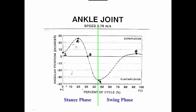From 0 to 40% is the stance phase, and from 40 to 60% is the swing phase. Positive degrees represent the joint going into dorsiflexion, and negative degrees represent plantar flexion.